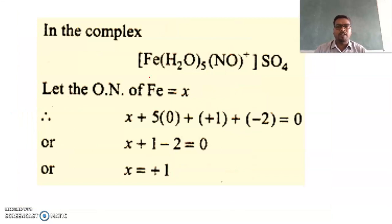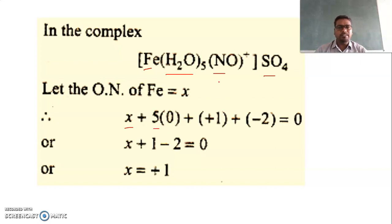Now let us see an iron complex: it contains iron as the central metal ion, water as a ligand, and nitrosyl (NO⁺) — this is a special case as nitrosyl is a positive ligand with charge +1. Sulfate is the counter ion. Taking the oxidation state of iron as x: there are five water molecules with charge zero, and one nitrosyl with charge +1.